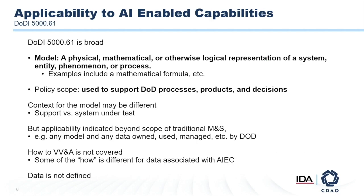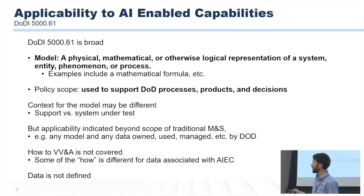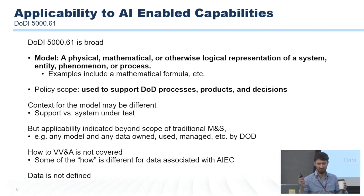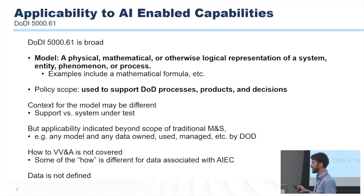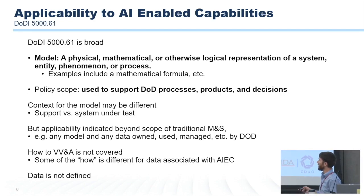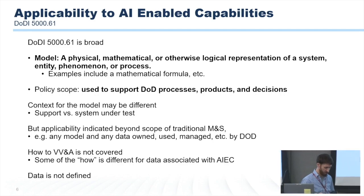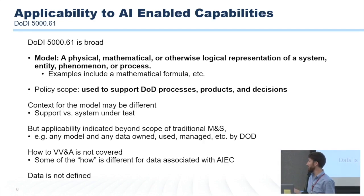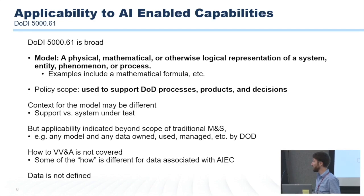Maybe it's just traditional models. Maybe AI is out of scope. Well, if you go and read the DODI as worded, a model is essentially anything that can be represented as a mathematical formula — very broad. The policy applies to something you're doing in DOD, and also some things outside of DOD that are used by DOD as well. So just on that reading, it seems to me that AI can be included in this. AI models seem to be represented.